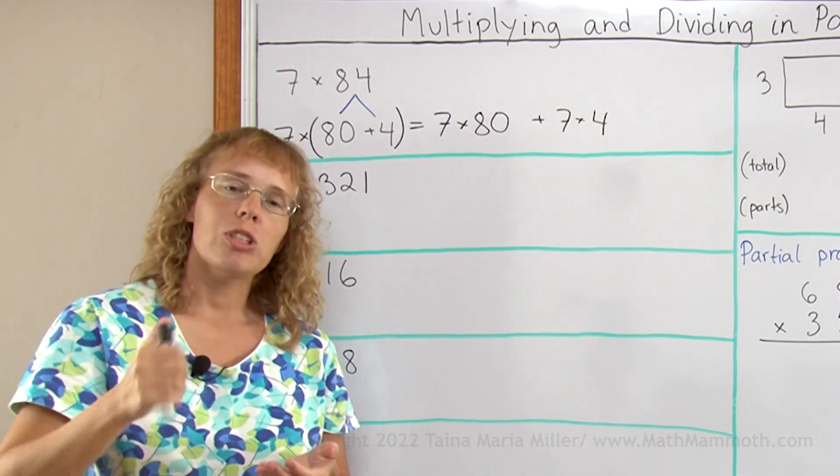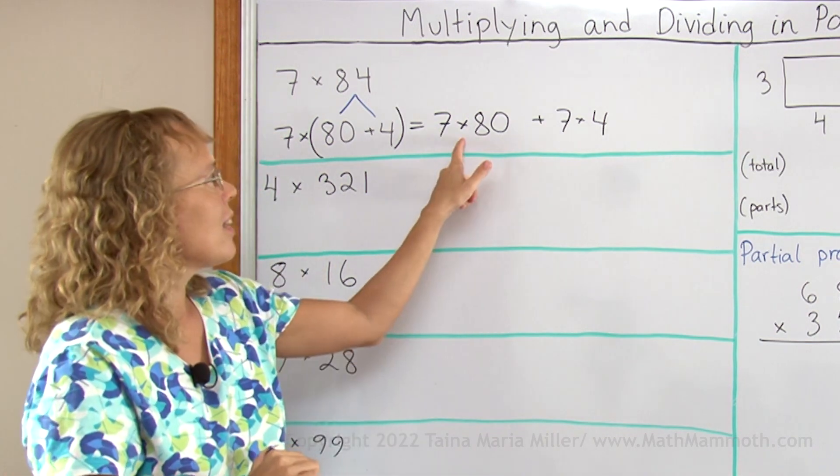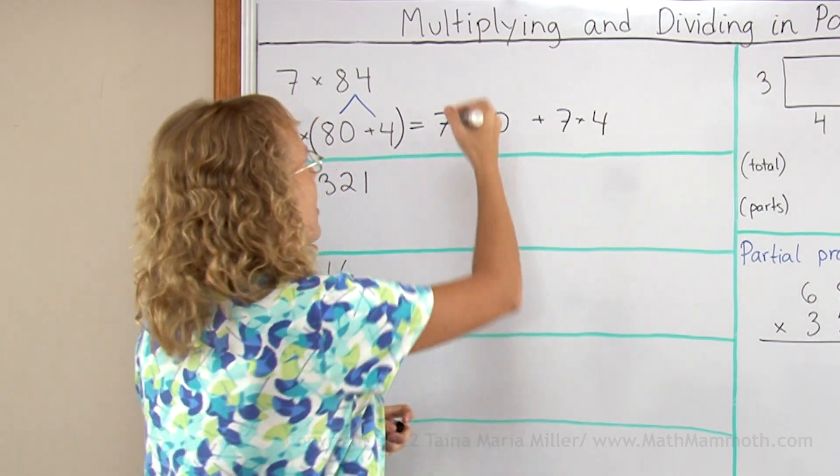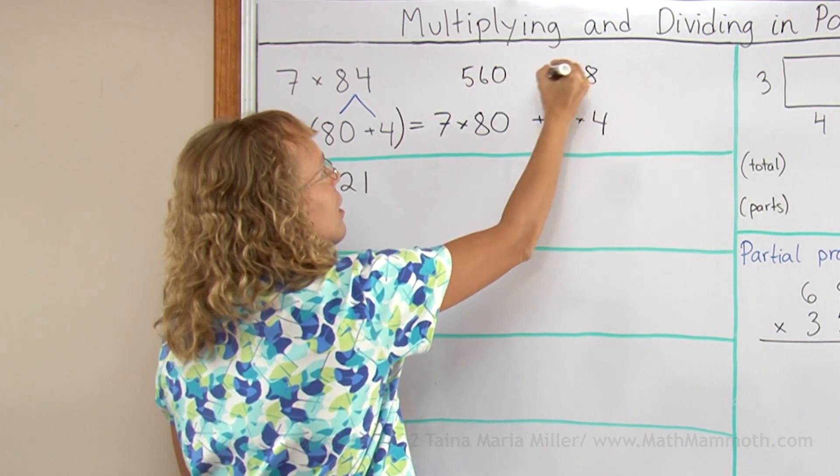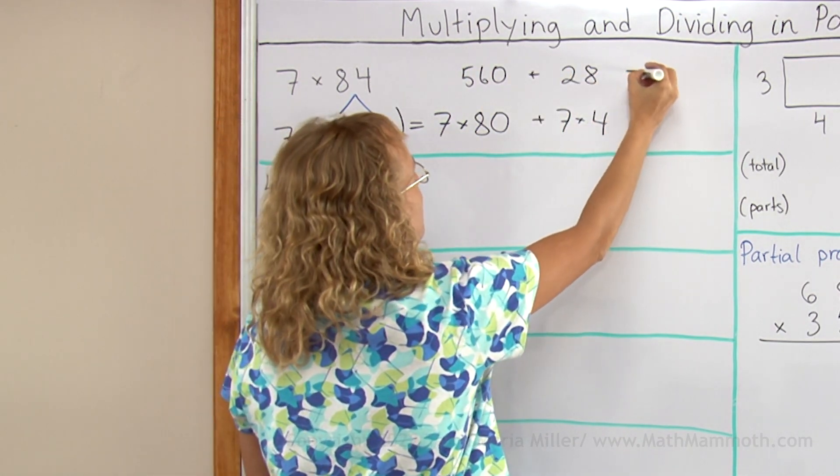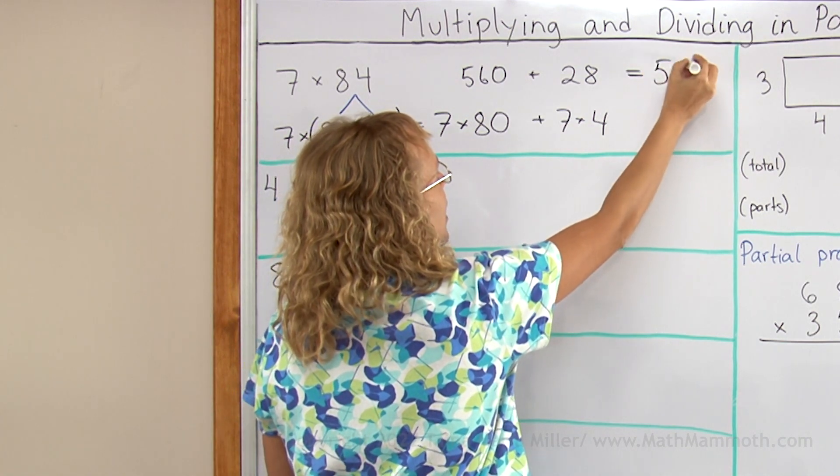So I multiply 7 times 80 which is 560, and then this is 28. For lack of space I'll write them above here. And lastly, add of course, 588.